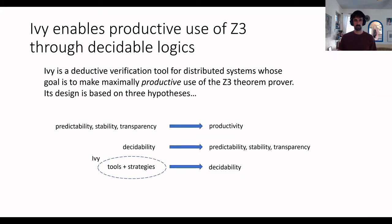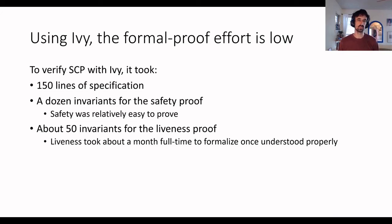Because of these observations, we chose to use the IVY prover for verification of SCP. IVY enables productive use of the Z3 automated solver through decidable logics. There are three main hypotheses behind IVY: first, that predictability, stability, and transparency increase verification productivity; second, that these properties can be achieved by restricting ourselves to decidable logics; and third, that tools and strategies in IVY can reduce verification of complex protocols like SCP to a set of decidable verification conditions.